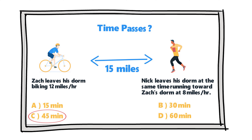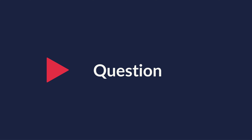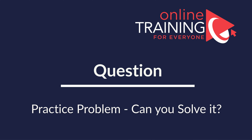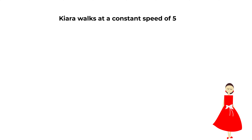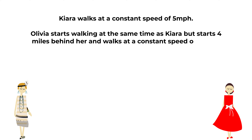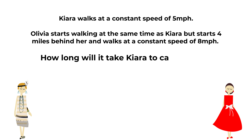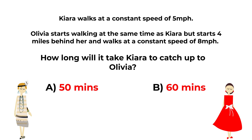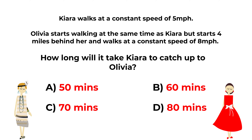Here's a practice question: Kiara walks at 5 mph. Olivia starts walking at the same time but starts 4 miles behind her and walks at 8 mph. How long will it take for Kiara to catch up with Olivia? Choices: A) 50 min, B) 60 min, C) 70 min, D) 80 min. Post your solution in the comments.